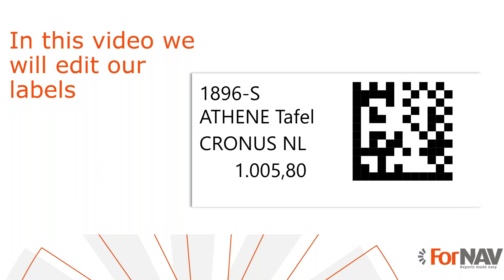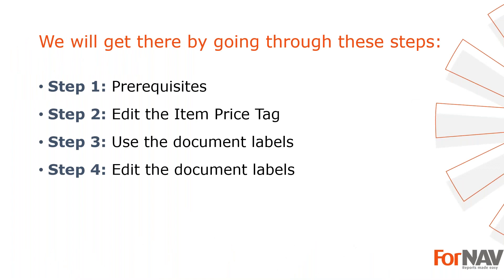Today we're going to edit Business Central labels. Labels are an essential part of the For Now report pack — they're used for shipping, production, warehousing, anything that requires identifying a product or a package. Since For Now makes working with reports easy, editing your Business Central labels is very easy as well. We'll cover prerequisites, adding a barcode to the item price tag, and editing a document label.